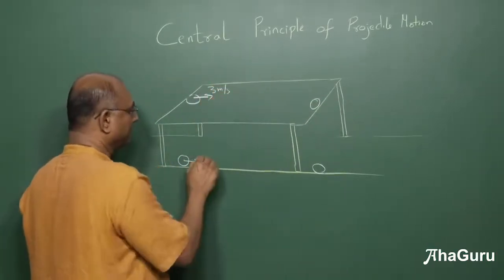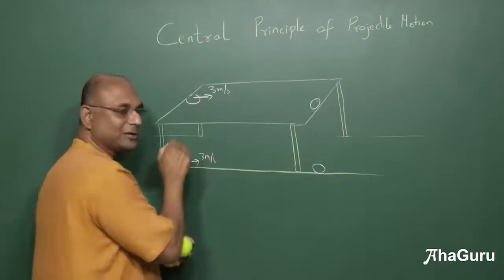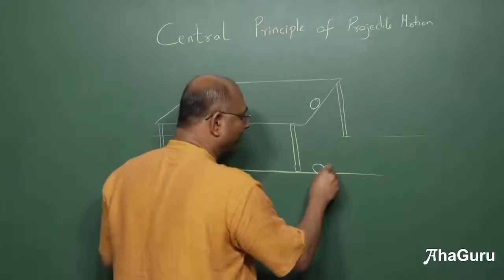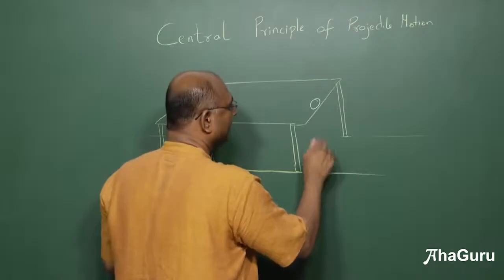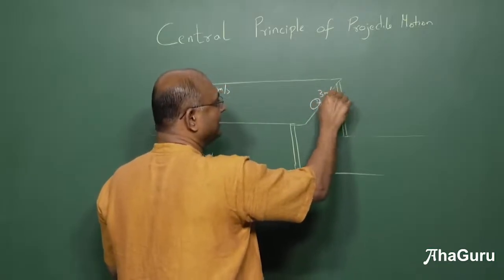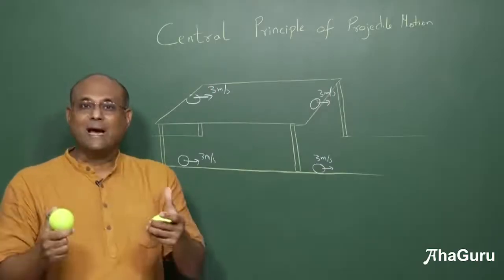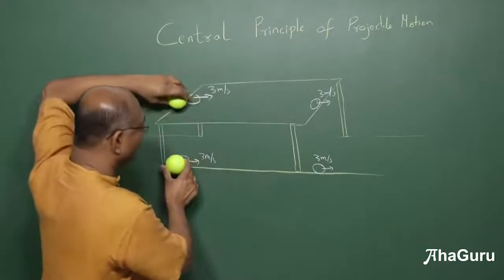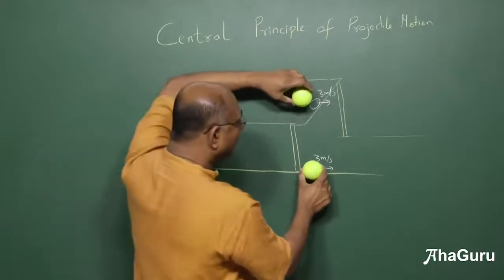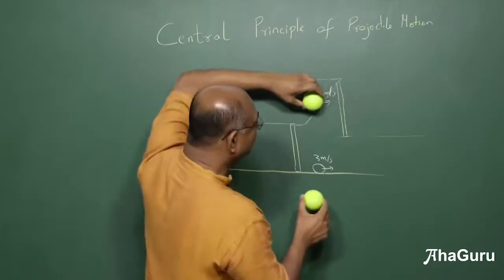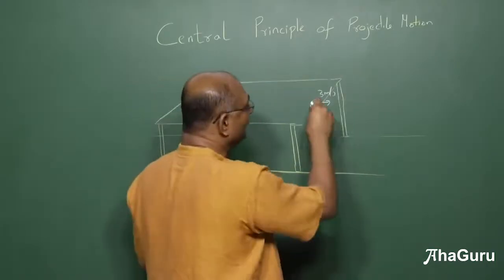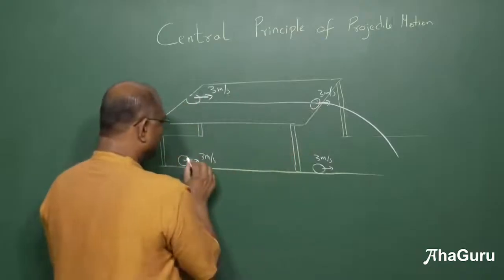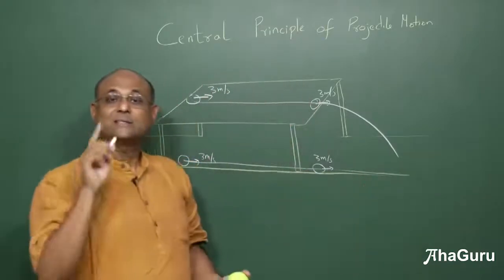Both balls are given the same velocity: 3 metres per second. The ball on the table moves horizontally toward the edge. By the time the ground ball has moved to a certain point, the table ball has moved the same distance. When the table ball reaches the edge, the ground ball is right below it — because both were moving at 3 metres per second. After the edge, the table ball falls and follows a curved path, while the ground ball continues horizontally.